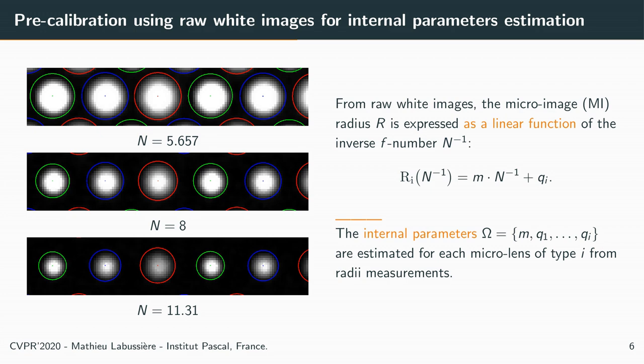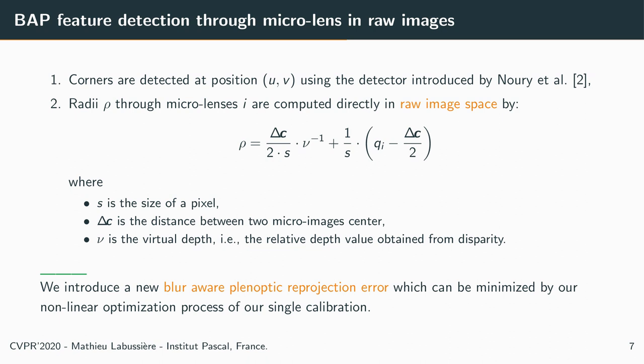We can now compute this feature. First, the UV part of our feature is computed using the corner detector of Nouri et al. Second, the radius rho through the considering micro-lens is computed in raw image space using the following equation, depending on the size of the pixel, the distance between two micro-image centers, and the virtual depth, which is the relative depth obtained from disparity.